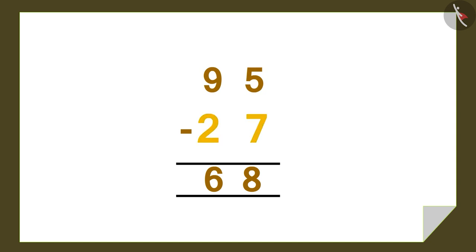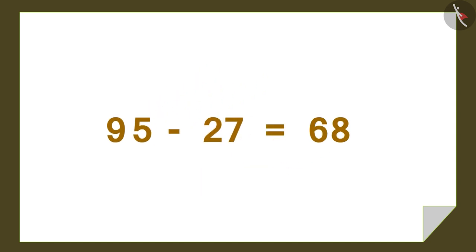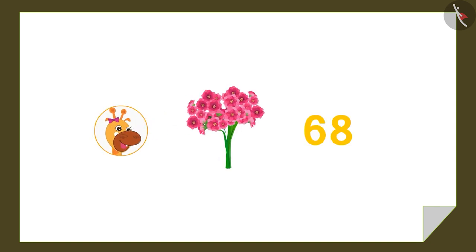95 minus 27 is equal to 68. So we can write 95 minus 27 equals 68. Gaffee has 68 flowers left.